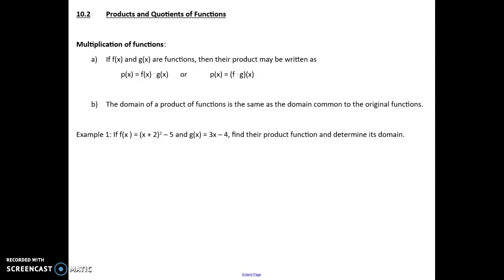So now we're going to look at section 10.2, which is products and quotients of functions. That means we're going to be multiplying and dividing. So when you multiply, you might see the dot in between, or you might see it as f dot g of x.